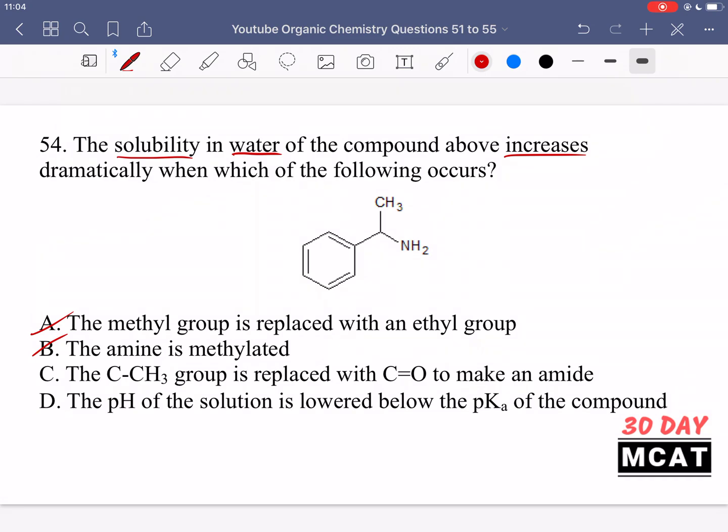Looking at option D, it's saying if the pH of the solution is lowered below the pKa of the compound. If it's a low pH, we have acidic conditions. This nitrogen goes from being NH2 to NH3+. It gains another proton and now has a positive charge. Therefore, we have a charged species. Whenever we have a charged species, that compound is very dissolvable in water. So option D would be a much stronger significant change because we're saying we want the solubility to increase dramatically. If we take a non-charged compound and make it charged, there's a significant drastic change in the solubility in water. So option D would be a stronger answer than option C.